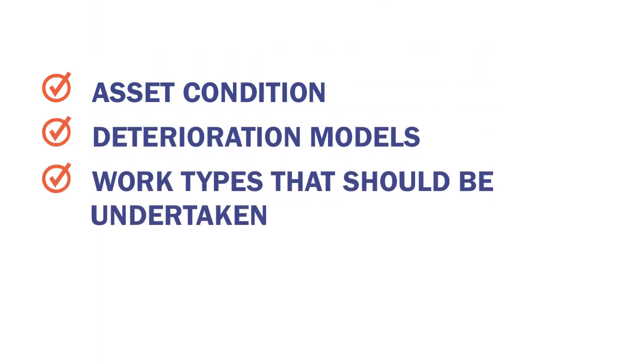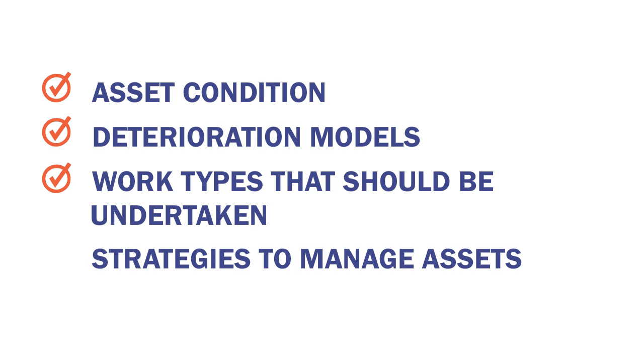A life cycle planning process must, at a minimum, include the following: the state DOT targets for asset condition, deterioration models, work types that should be undertaken to preserve or improve assets along with their relative unit cost, and strategies to manage assets while minimizing costs during the whole life of assets.